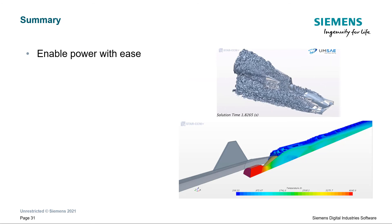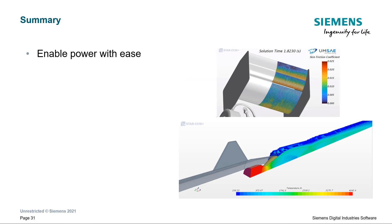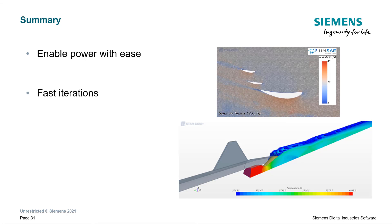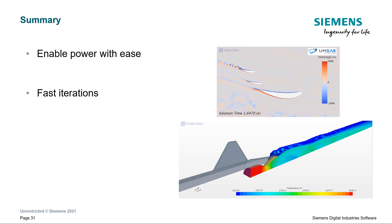In summary, Star-CCM+ drastically cuts down the time spent building and running CFD simulations while retaining the power needed to accurately capture physics. It enables quick design iteration either manually or by automating a design space exploration study, and supports deeper system investigation with moving bodies and time-unsteady solutions.